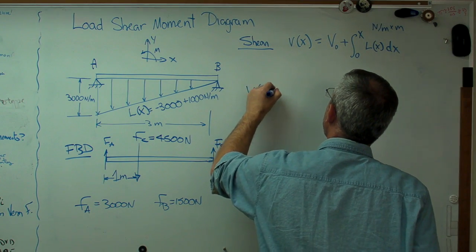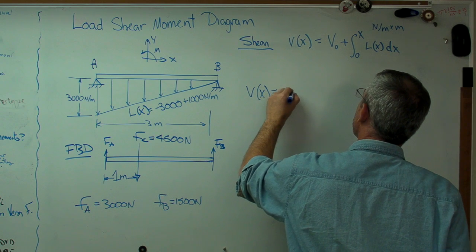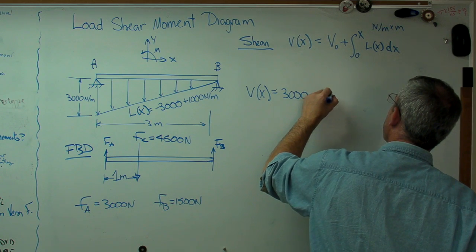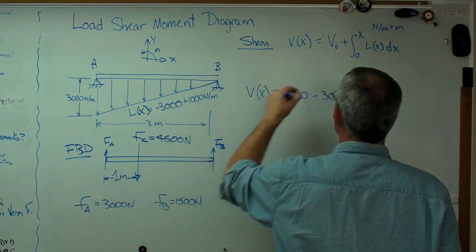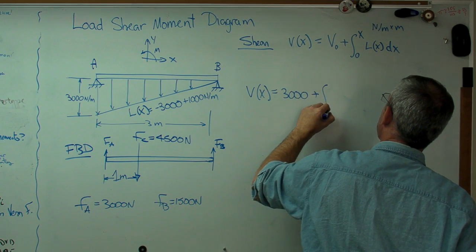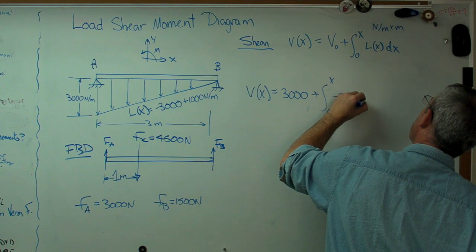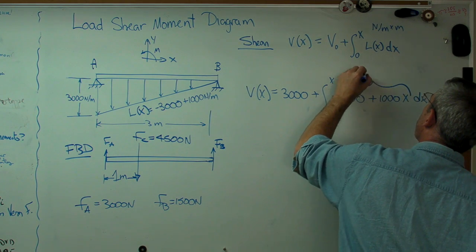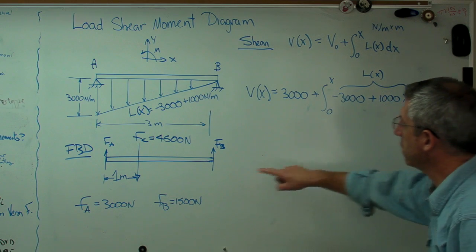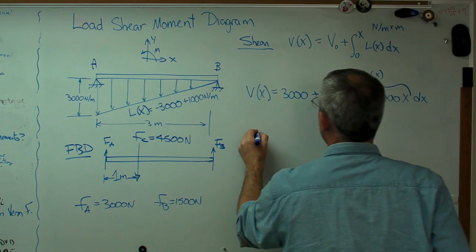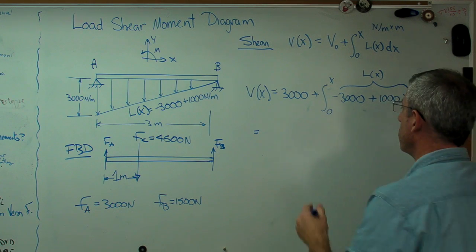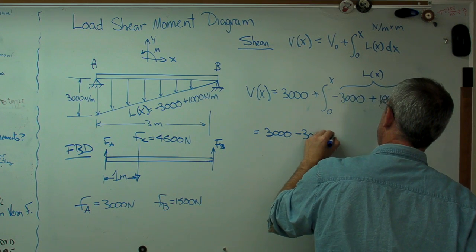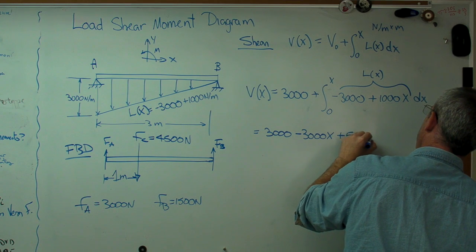So, V of X equals 3,000 newtons. I'm going to leave the units out of this, just to keep it simple. The integral of L of X, which is minus 3,000 plus 1,000x dx. So, that right there is L of X. Let's integrate this now. Now, this is just a polynomial, so this is easy to integrate. 3,000 minus 3,000x plus 500x squared.